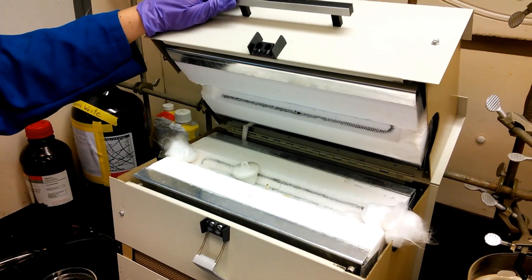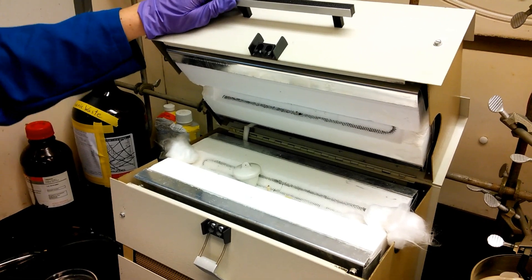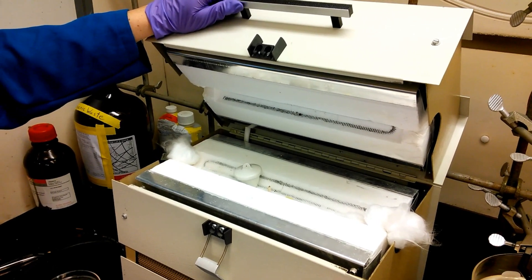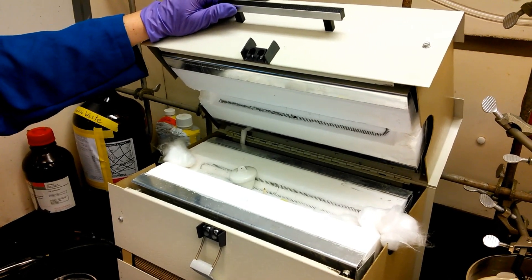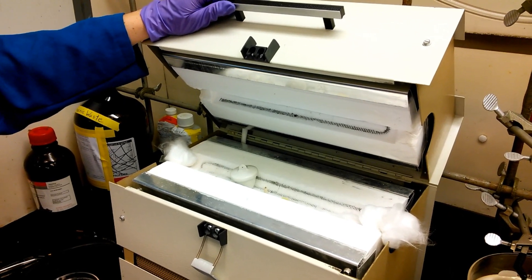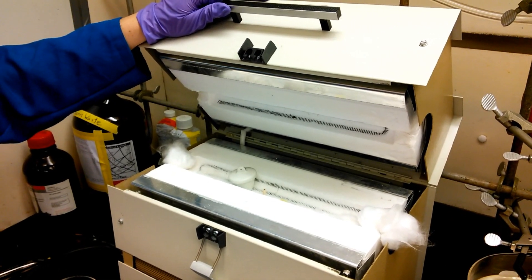The last step in our filmmaking process is to heat our film to 500 degrees Celsius in a furnace. This removes any residual water and converts our tungsten oxide to the monoclinic crystal structure.